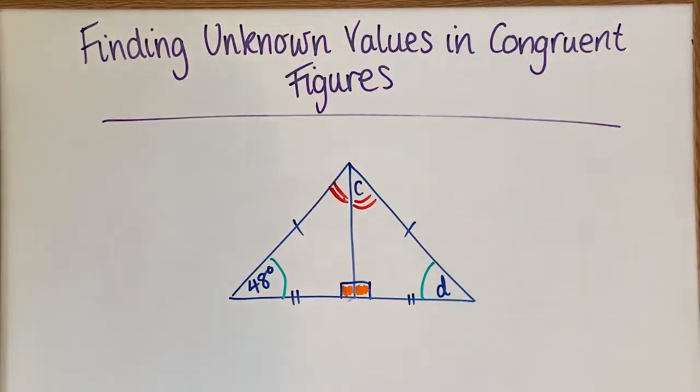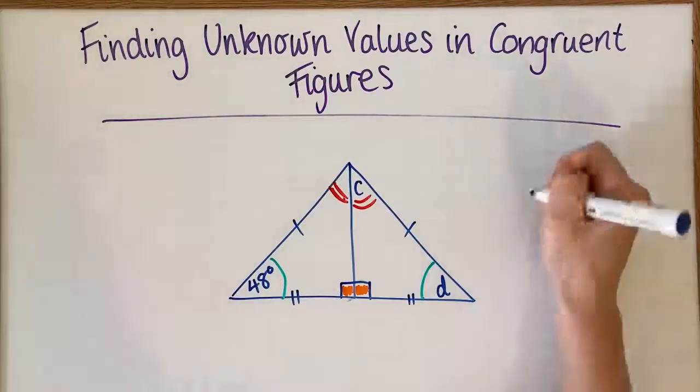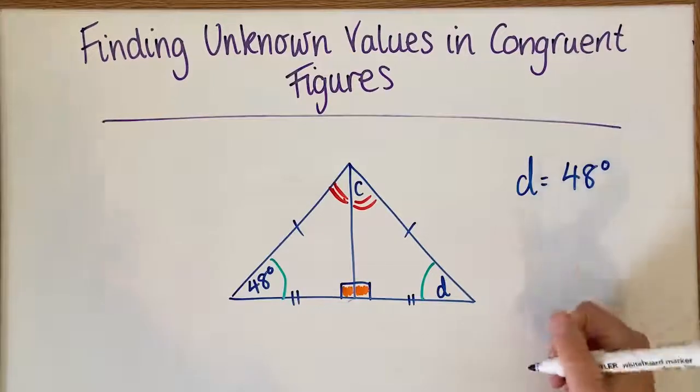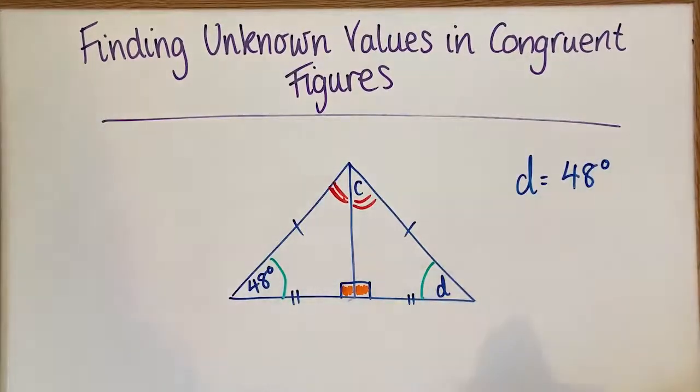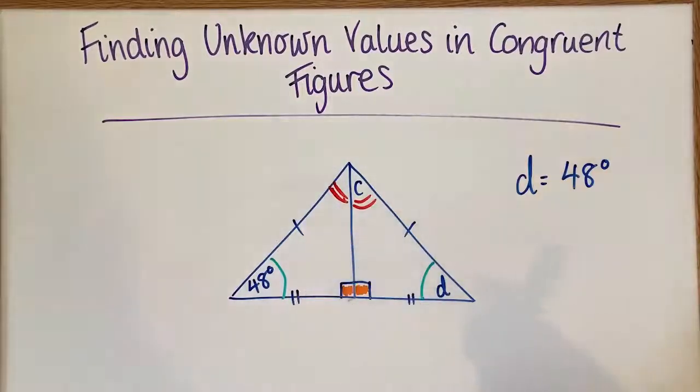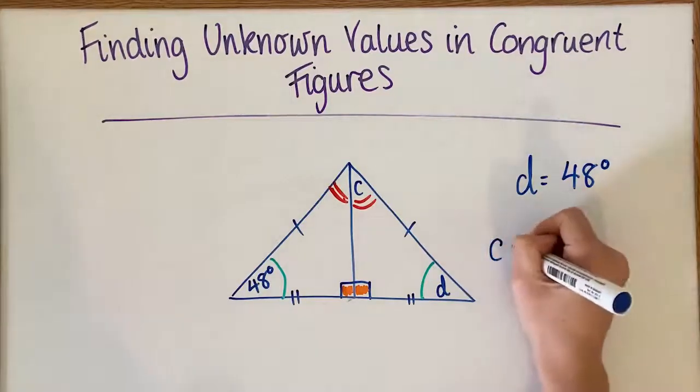OK, so in order to figure them out, D is just going to be the same as 48 degrees because they are the same angle. Now, to find C, we haven't been given a value here, but from a previous lesson, we know that the interior angles of a triangle add to 180 degrees.